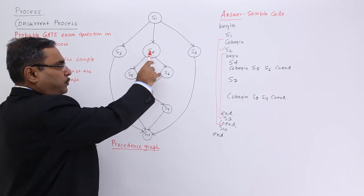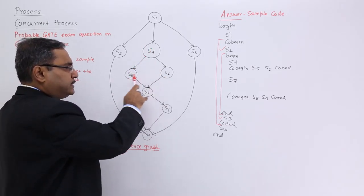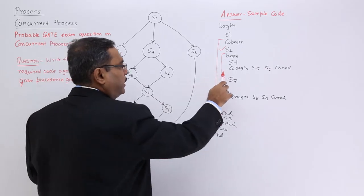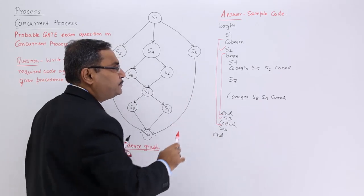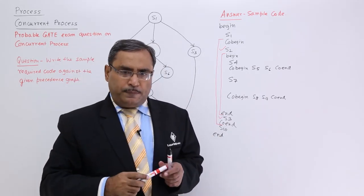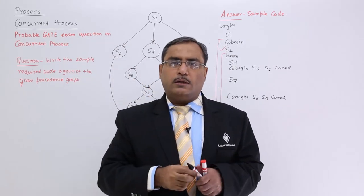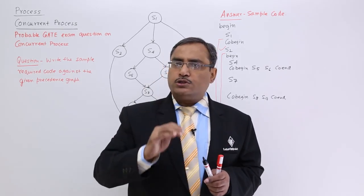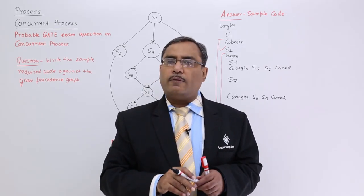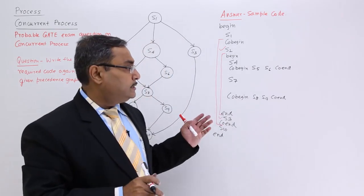So what about this one? This one in series with this, but they are in parallel. S7, S8, S9 will be in parallel and this part is clear to you. So in this way, please divide this total precedence graph according to the block and write the code in block form. In this way, this sort of question can be answered.